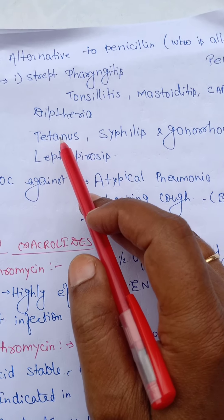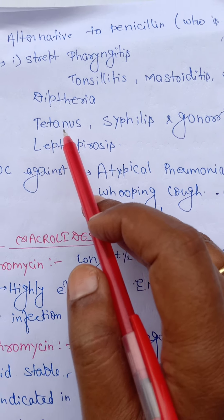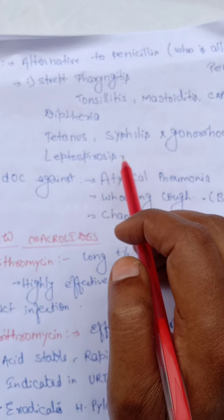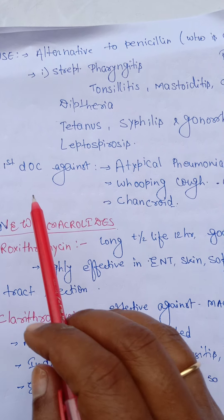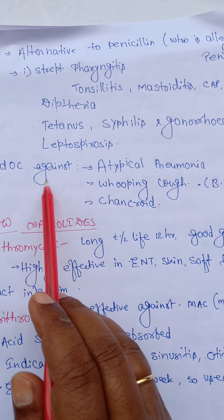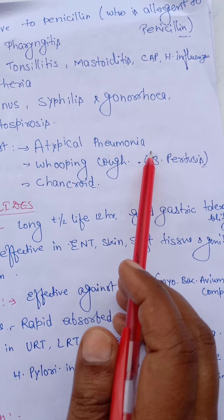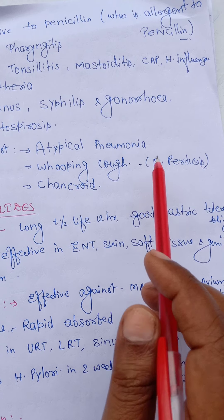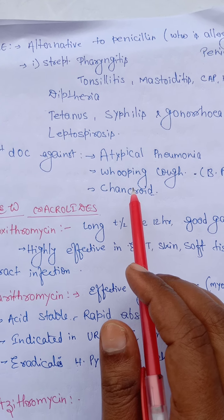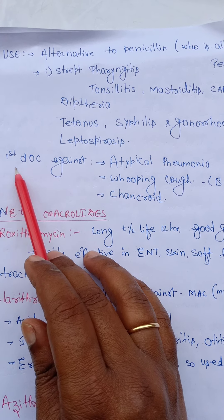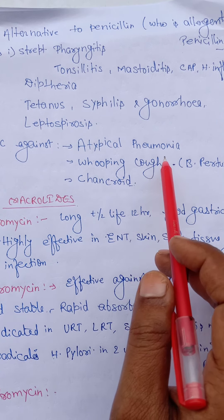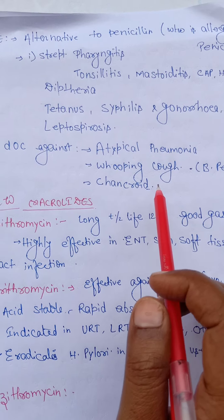Erythromycin is also used against tetanus, syphilis, gonorrhea, and leptospirosis. It is the first drug of choice against atypical pneumonia, whooping cough caused by Bordetella pertussis, and chancroid.